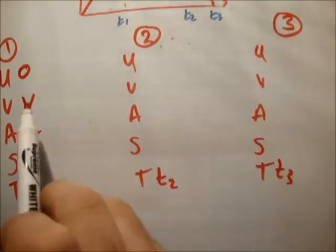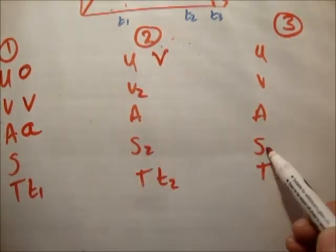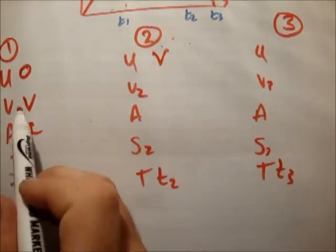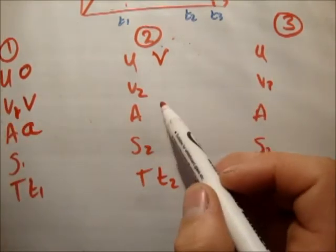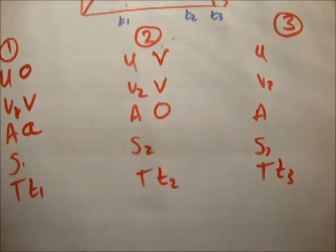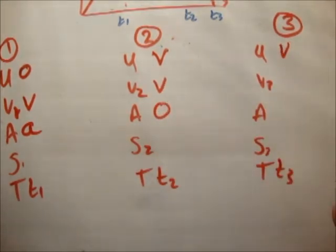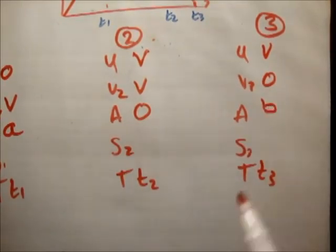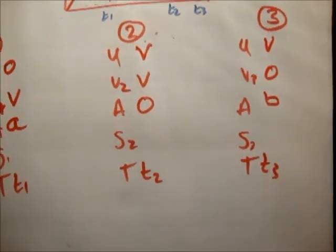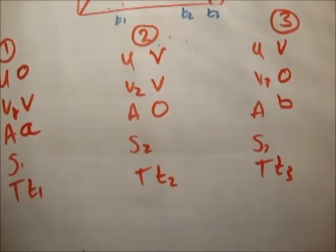Anyway, to be honest, that's only a very minor point. So the first thing is, let's do our uvast as normal for the three areas 1, 2, and 3.